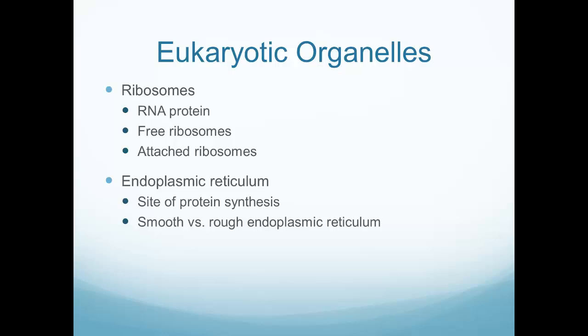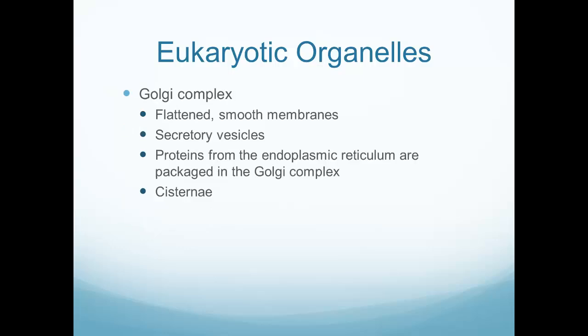Some organelles inside our eukaryotic cell: ribosomes are where we contain our RNA protein, and we have both free and attached ribosomes. The endoplasmic reticulum is the site of protein synthesis within the cell. We also have the Golgi complex, where proteins from the endoplasmic reticulum are packaged up. The Golgi also has the ability, through secretory vesicles, to release some of those proteins to neighboring cells if necessary.